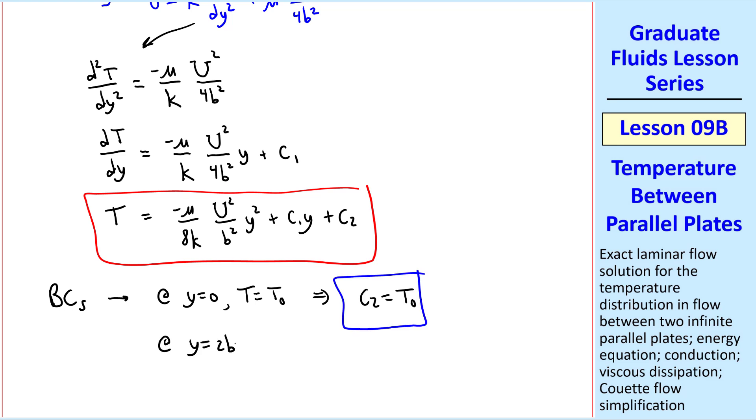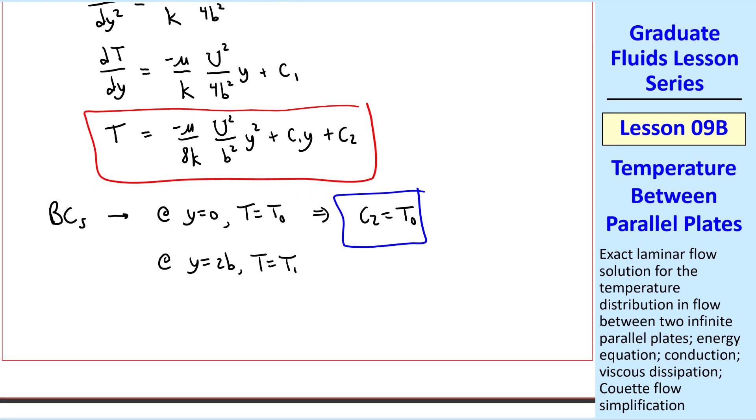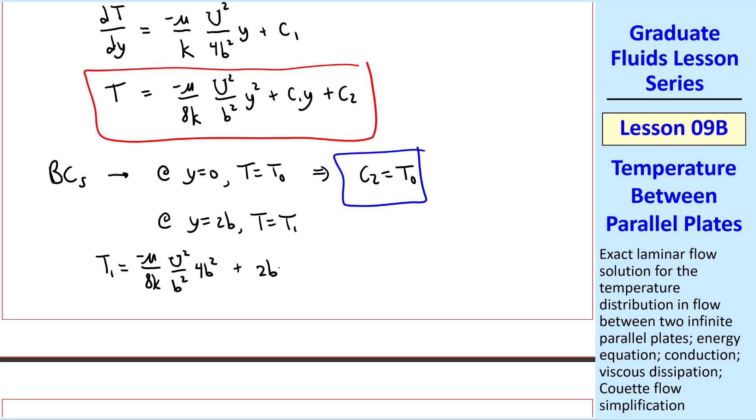Also, at y equal 2b, the top plate, t is t1, so we do a little bit of algebra. t1 is negative mu over 8k u squared over b squared. y squared is 4b squared at the top plate, plus 2b c1 plus c2, which is t naught. With a little bit more algebra, we can solve for c1. We get t1 minus t naught over 2b plus mu u squared over 4bk.